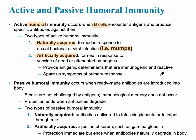The flu vaccine gives you a dead or weakened — attenuated — flu virus. The nice thing about this is it spares us the symptoms of the primary response. If immunity is naturally acquired, we have to suffer through the symptoms, whereas if it's artificially acquired, we don't.